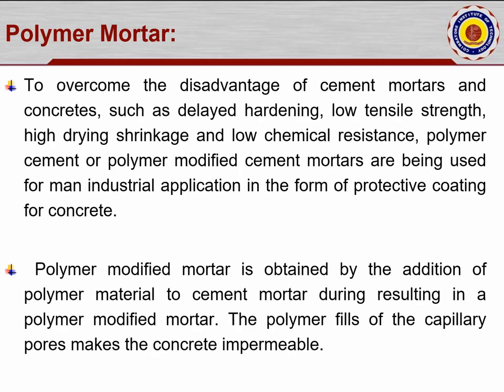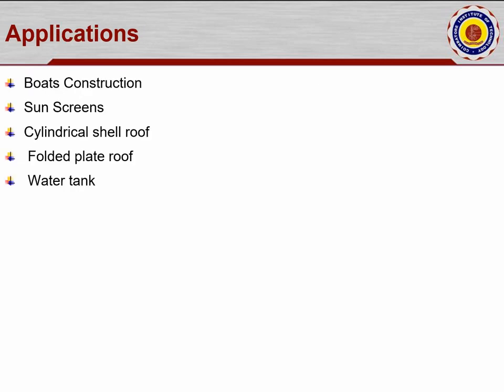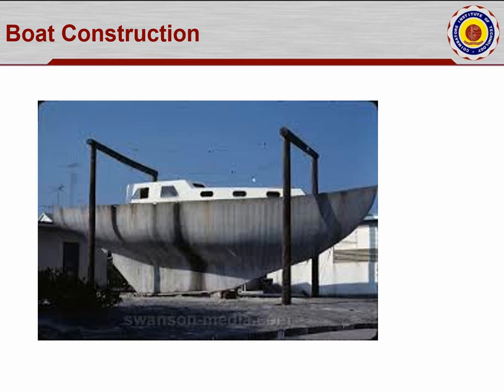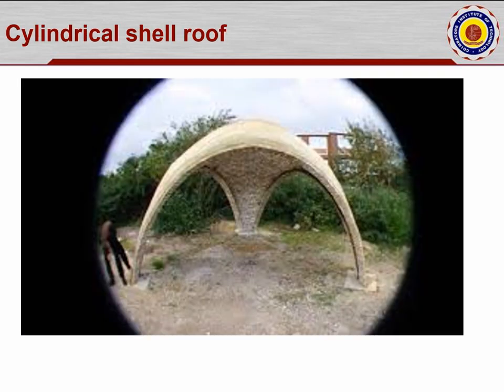Polymer mortar overcomes disadvantages of cement mortar and concrete such as delayed hardening and low tensile strength, and is suitable for industrial applications. Polymer modified mortar is obtained by adding polymer material to cement mortar; the polymer fills capillary pores making the concrete more impermeable. Applications include boat construction, cylindrical shell roofs, folded plate roofs, and water tanks. A key highlight is that curing time is also reduced with the thin structure.